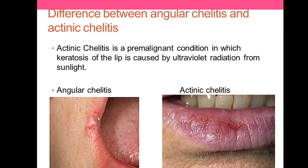Angular cheilitis can also occur due to iron deficiency, vitamin B deficiency, and HIV infection. In contrast, actinic cheilitis is due to ultraviolet radiation from sunlight, and importantly, it is a pre-malignant condition.